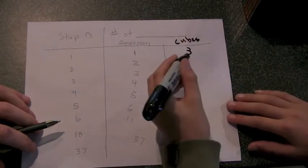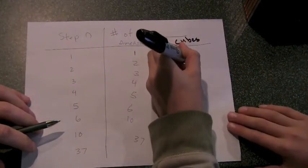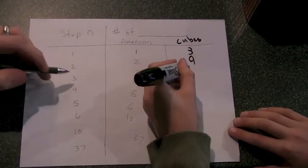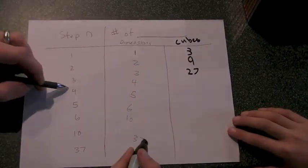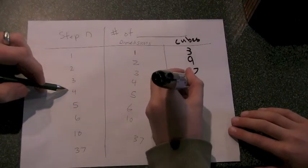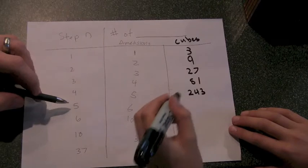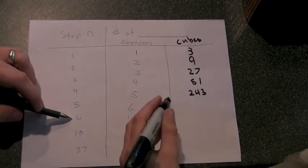Alright. Two, there were nine cubes. Alright. So, it's going to increase by three. Twenty-seven. Eighty-one. Step four. Eighty-one. Step five. Yeah. Two, forty-three. Step six. Step six. Seven, twenty-nine.